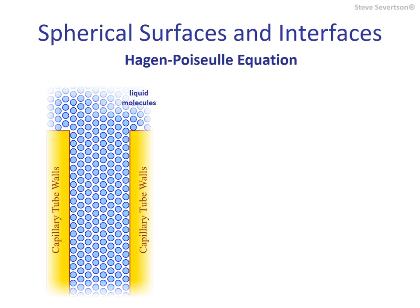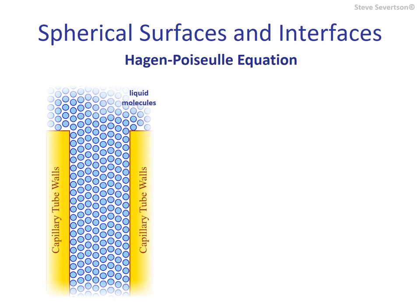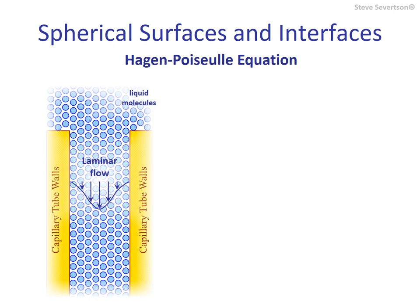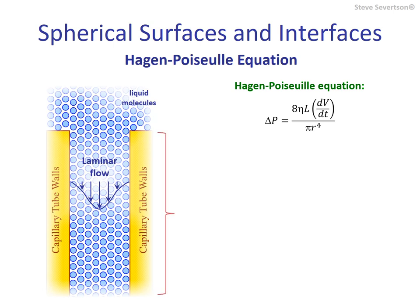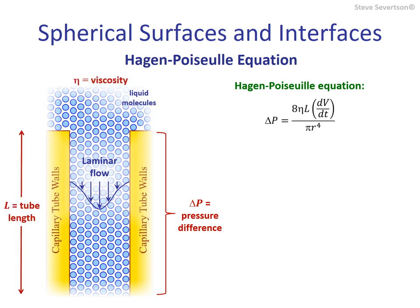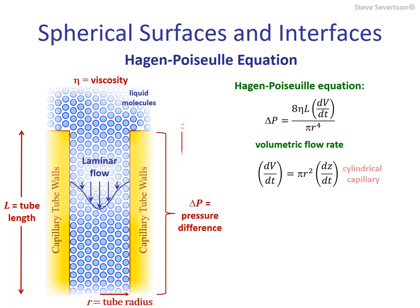So far we've only considered equilibrium conditions, but next we briefly discuss modeling the rate at which liquid moves through cylindrical capillaries. The Hagen-Poiseuille equation relates the pressure change across the cylindrical capillary tube to the laminar volumetric flow rate through the viscosity of the liquid, tube length, and its internal radius. This can be rewritten in terms of liquid velocity using the cross-sectional area of the tube, and a more general form allows for the variation in pressure change across the tube.